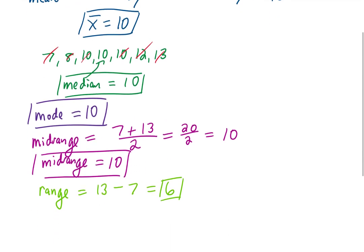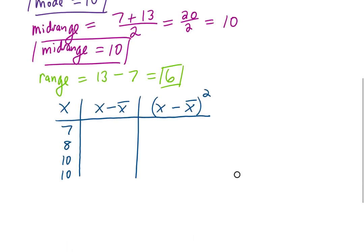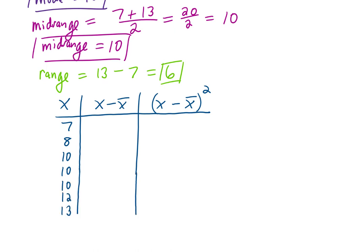Finally, we're going to find a standard deviation for this data set. The way we've been doing this is setting up a table with our data values in the leftmost column. I'm just going to copy them down in order from our list above. I'm going to move this up and write the rest of the values in. Then, in the second column, we're going to subtract the mean from each one of those data values.